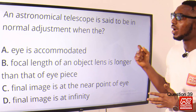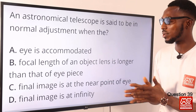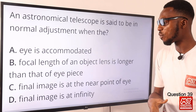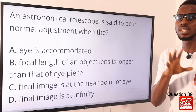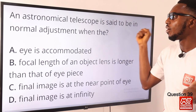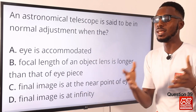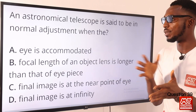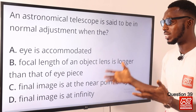Question 39: an astronomical telescope is said to be in normal adjustment when the final image is at infinity. At this point, the principal focus of the eyepiece corresponds to that of the objective lens. The telescope uses two converging lenses — objective and eyepiece — and under normal adjustment the principal foci coincide, placing the final image at infinity. Option D is the right option.